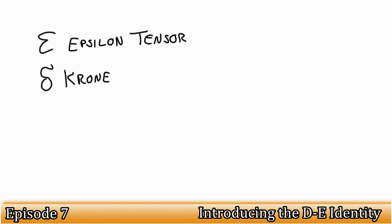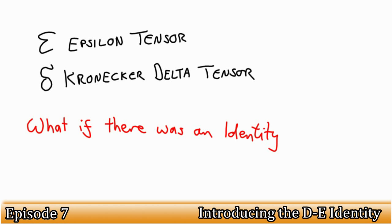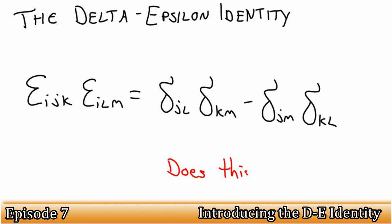We know the epsilon symbol, a third order tensor, and the Kronecker delta, a second order tensor. What if I were to say that there existed an identity that directly linked them together? This identity, the delta epsilon, is as follows: epsilon i j k epsilon i l m is equal to delta j l delta k m minus delta j m delta k l. The identity is rather complicated as you can see, but it's important to know. We'll go through some steps to help you understand why this works.